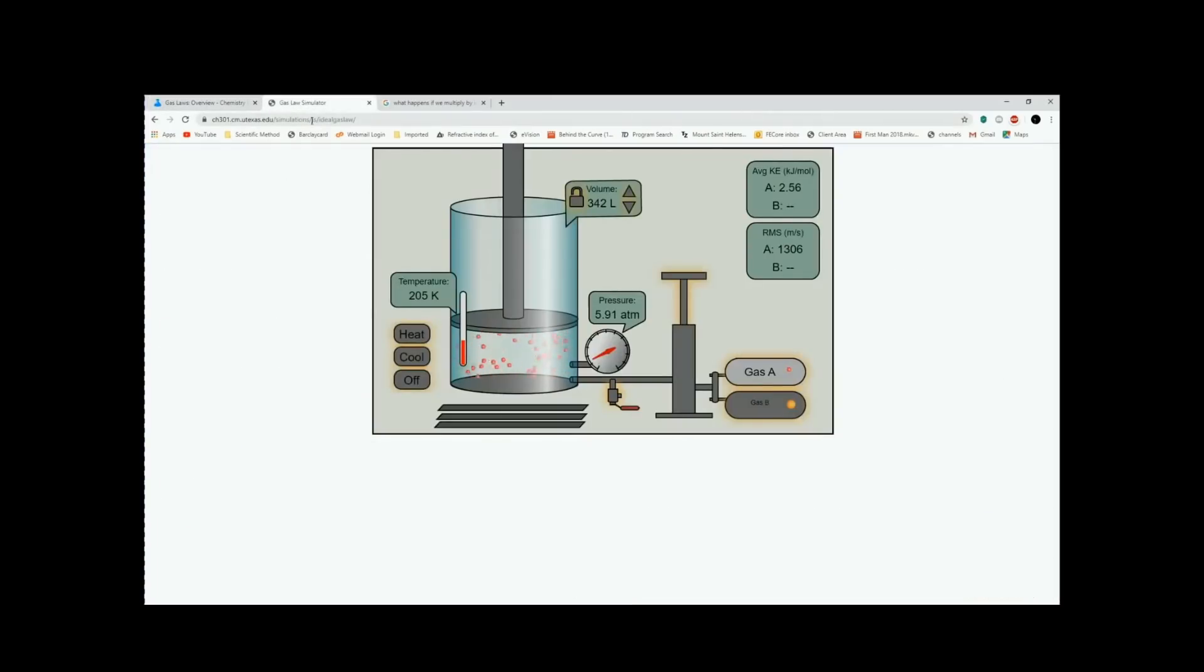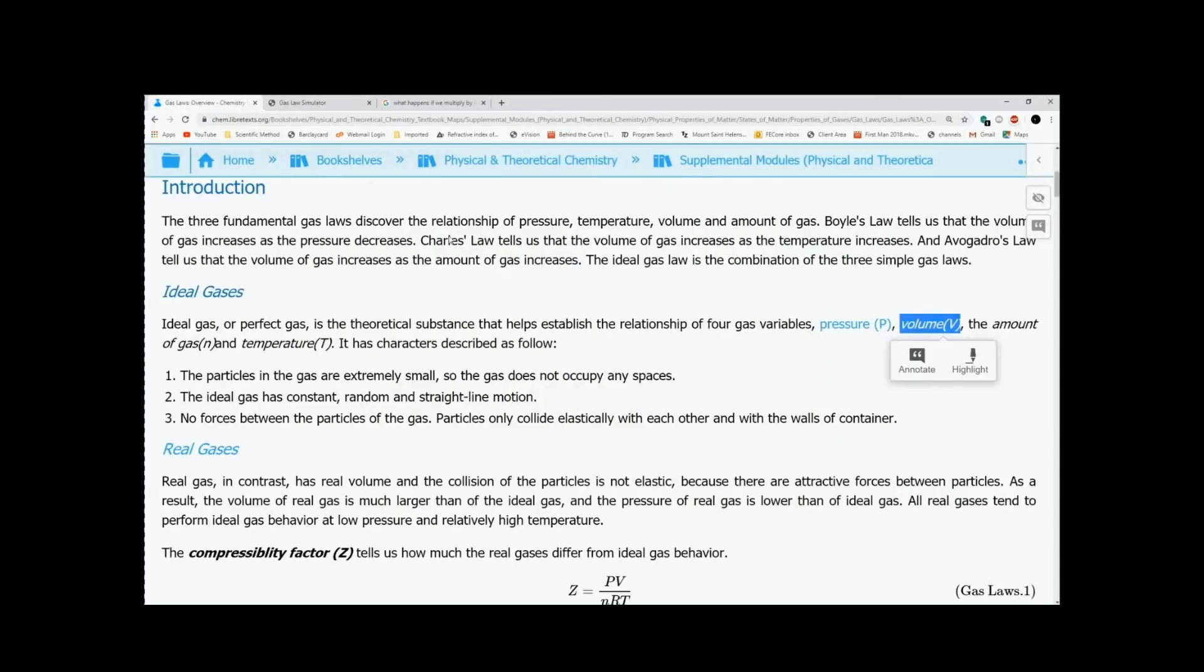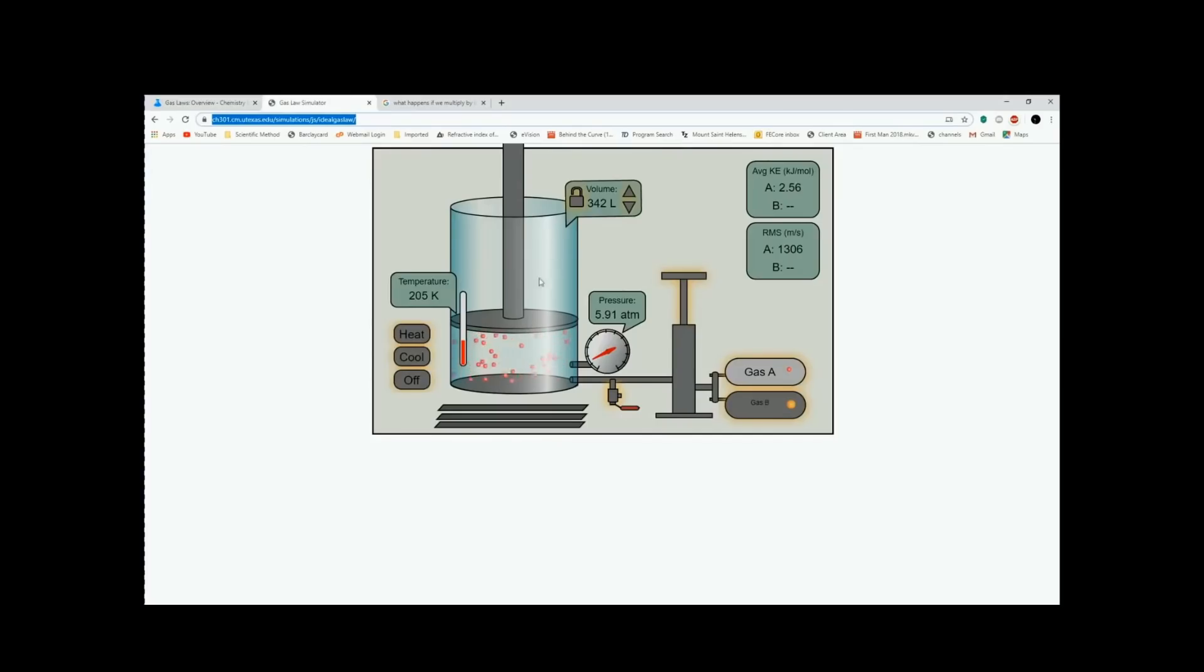Now, here is a link from utexas.edu and this is demonstrating the relationship between the four factors that we just looked at. So we've got pressure, volume, the amount of gas and temperature. If you have a nice handy simulator that you can play around with, you can see that obviously there is a container. And in this example, we've got the volume that we can play with, we've got the temperature that we can play with, we've got the amount of gas going in that we can play with, and we can play around with all the variables.